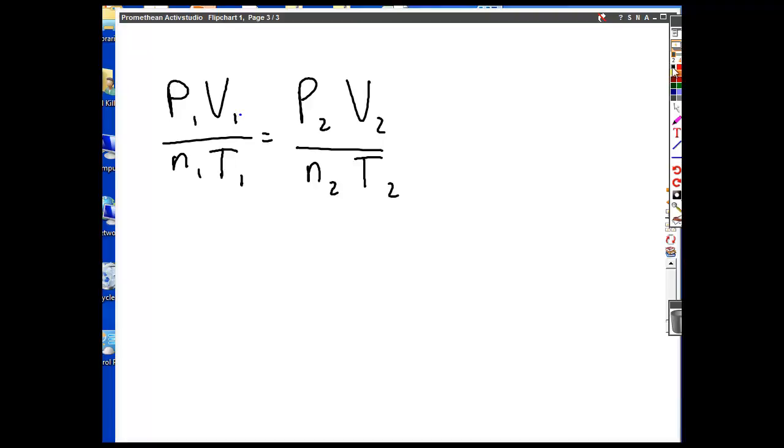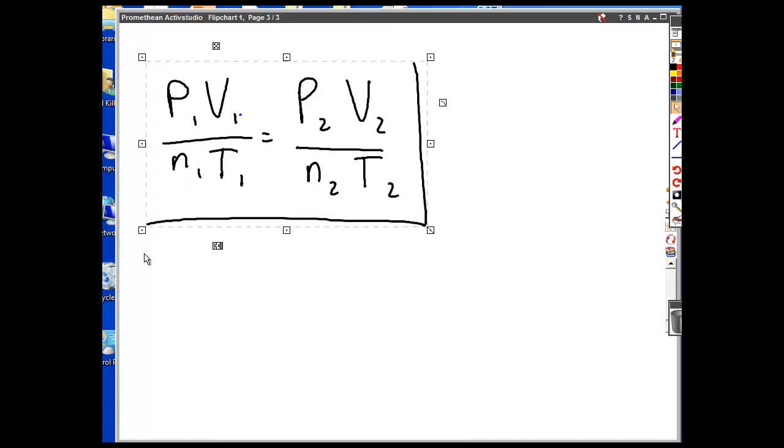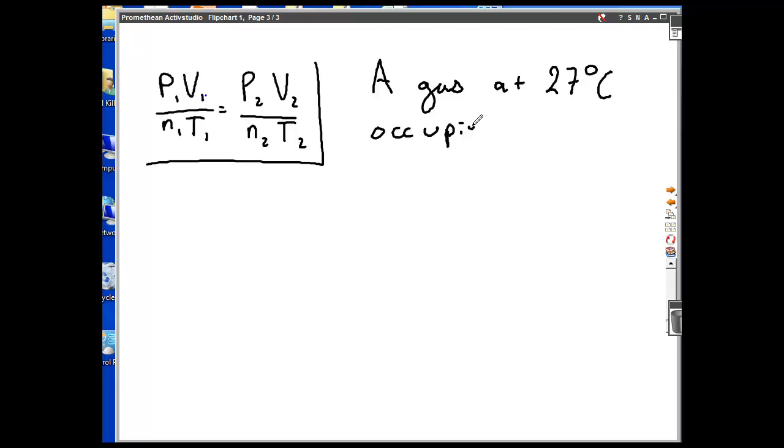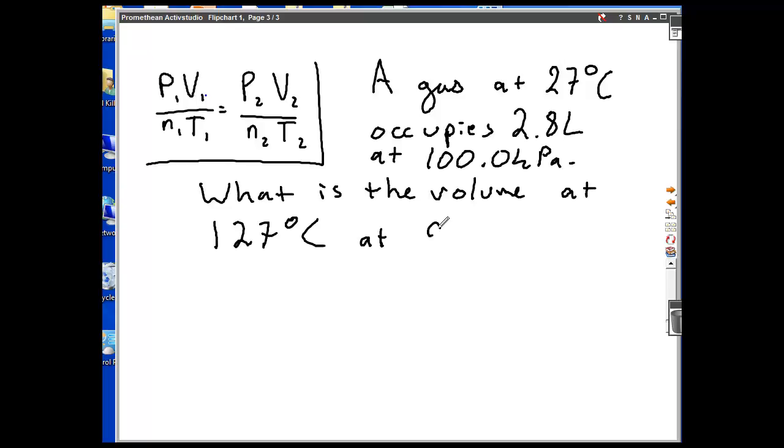So, let's try an example problem of the combined gas law. And I'll give this to you guys. I'll give this gas law to you. A gas at 27 degrees Celsius occupies 2.8 liters at 100 kPa. What is the volume at 127 degrees Celsius at 90 kPa?